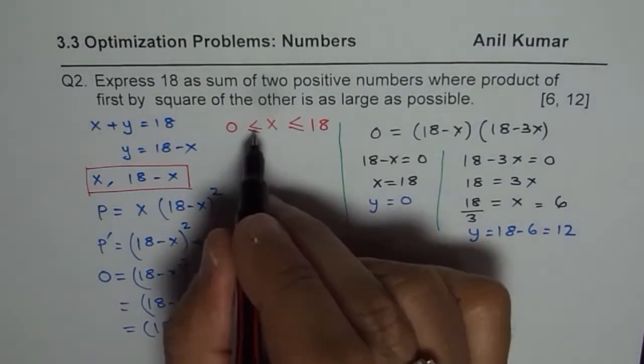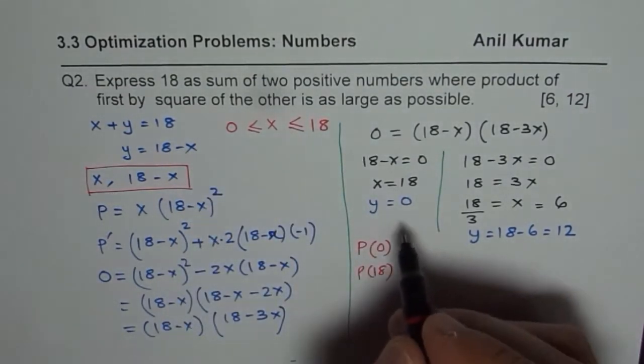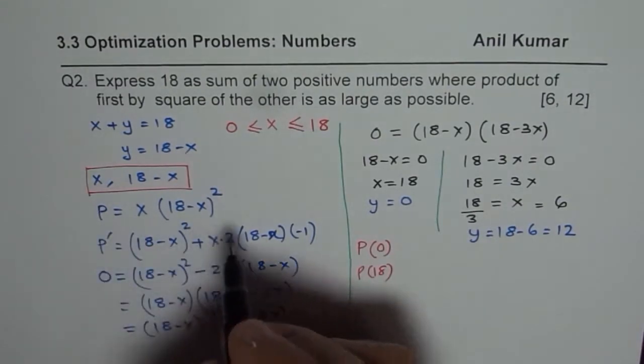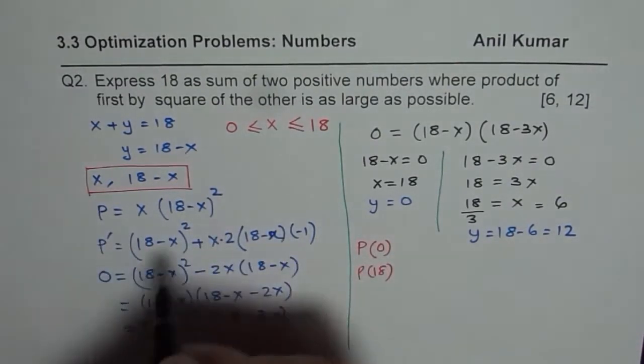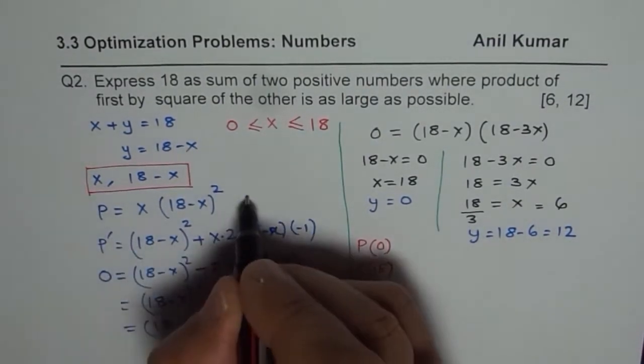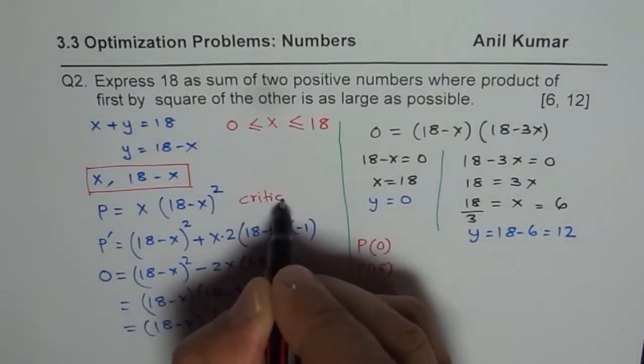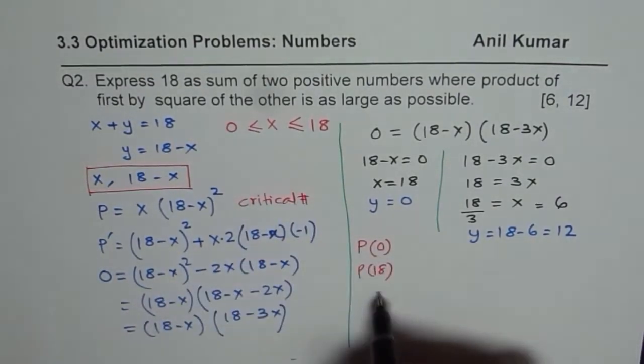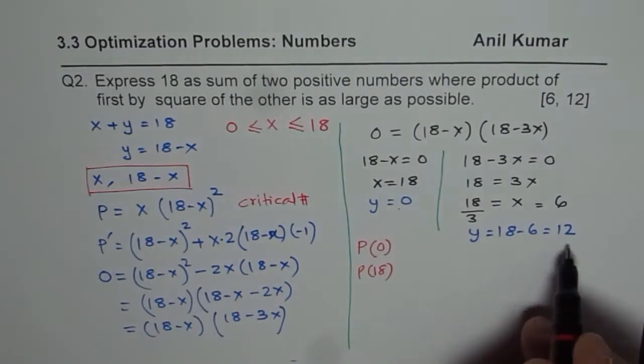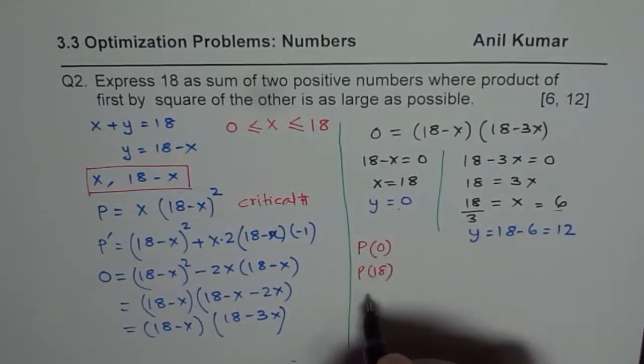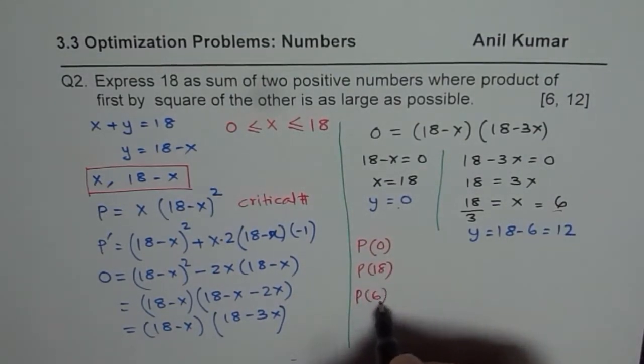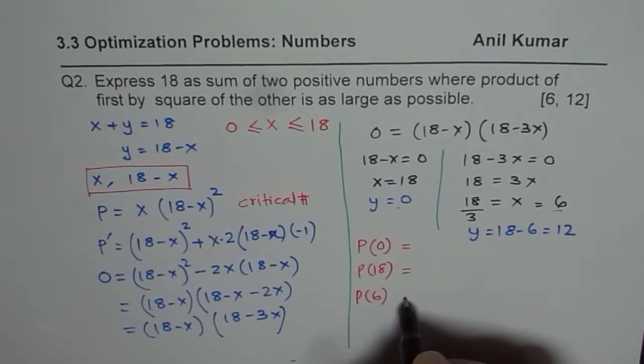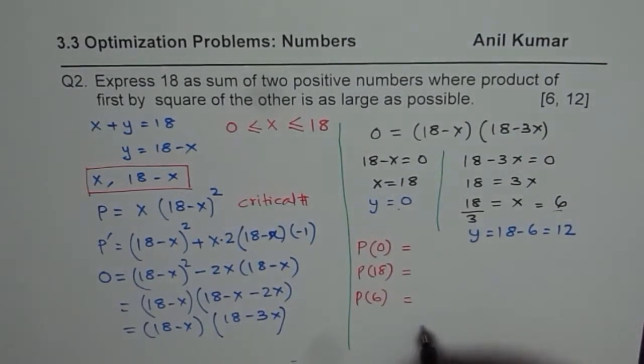P of 0, P of 18 - these are the boundary conditions. And P dash equals 0 gives us the critical points. So we found the critical number at 0 and 6. Once you find these values then you can compare which one is the largest.